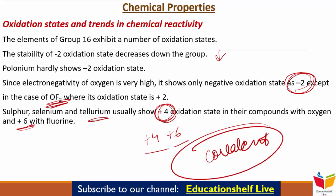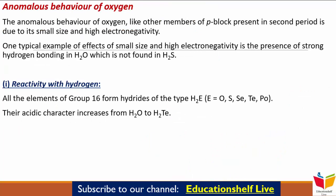अब आते हैं Oxygen के Anomalous Behavior पे। The anomalous behavior of Oxygen, like other members of P-Block present in second period, is due to its small size and high electronegativity। One typical example is the presence of strong hydrogen bonding in H₂O, which is not found in H₂S। अब Oxygen में क्योंकि d orbitals present नहीं हैं, इसलिए इसकी covalency सिर्फ 4 तक ही है, और practice में 2 से ऊपर नहीं जाती।